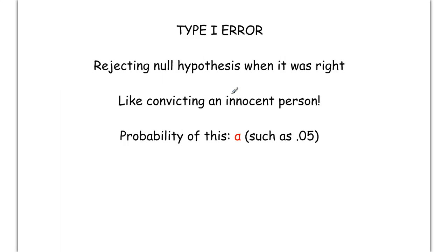Now, a type 1 error is whenever you reject the null, but the null was actually right. So when you over reject, when you reject by accident, you reject and make a mistake. In the court system, that would be like convicting an innocent person. Since the null hypothesis is that you're innocent, you rejected the null. You convicted. You said they were guilty, but they actually weren't. They were actually innocent. So you made a mistake by over rejecting.